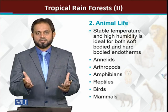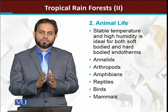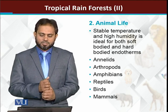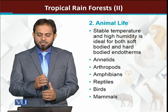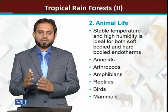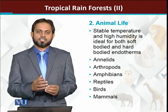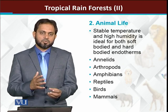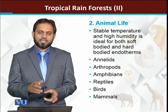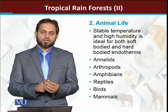Moving to animal species present in tropical rainforests: again, like plants, more than 50% of animal species are reported from the tropics — a huge number of animal diversity. Among the animals, because environmental conditions are optimum, all types of animals are present, from all phyla and groups.